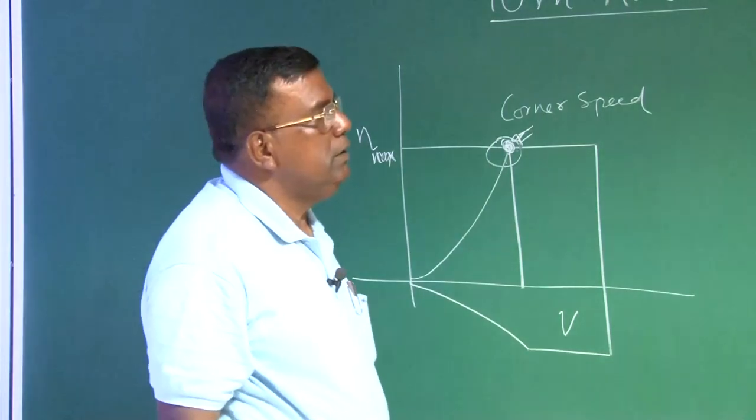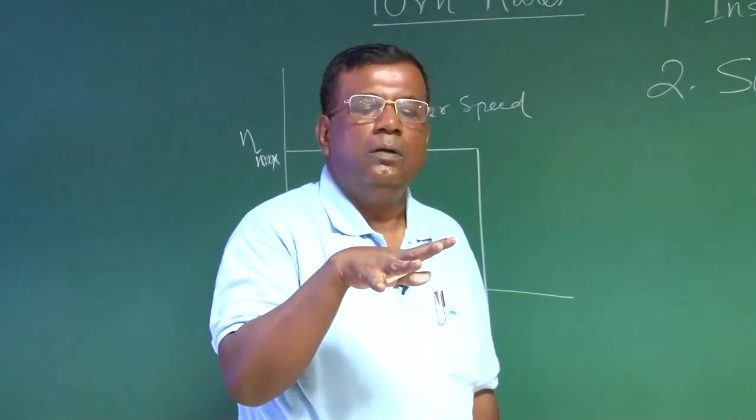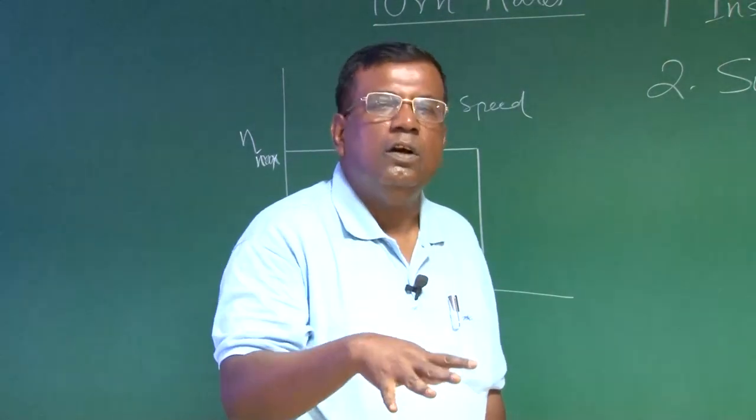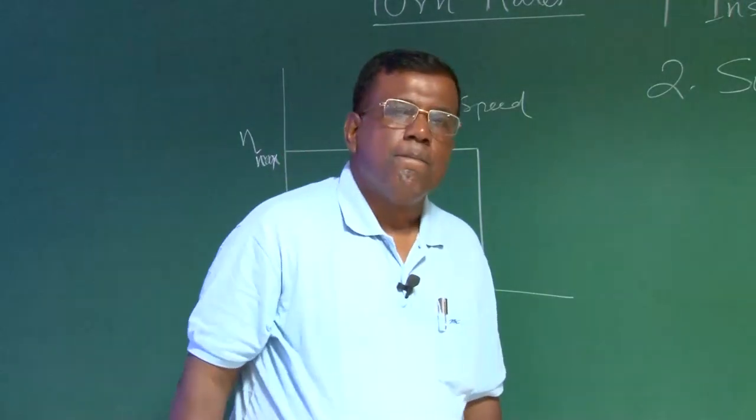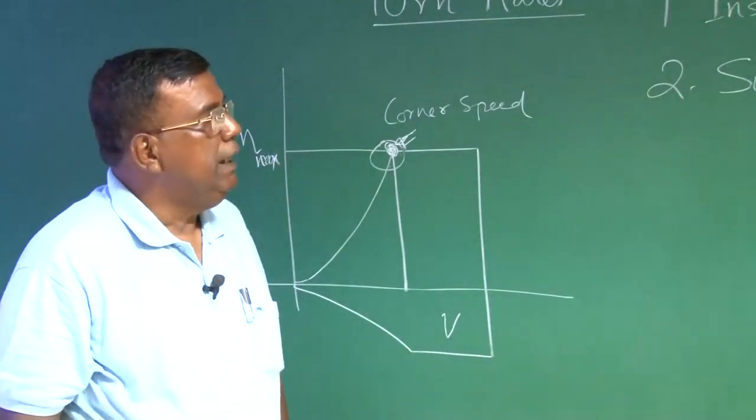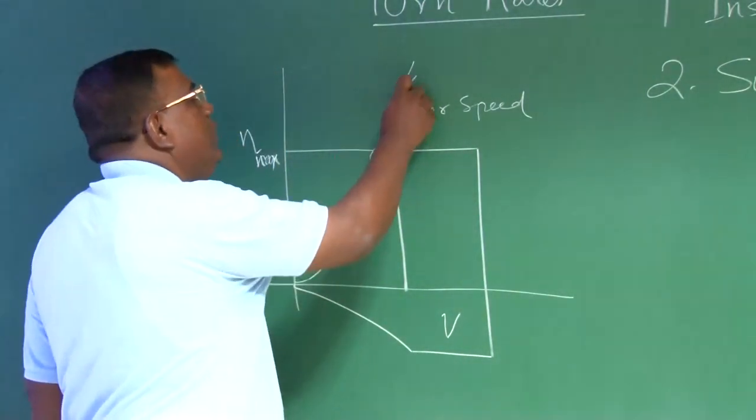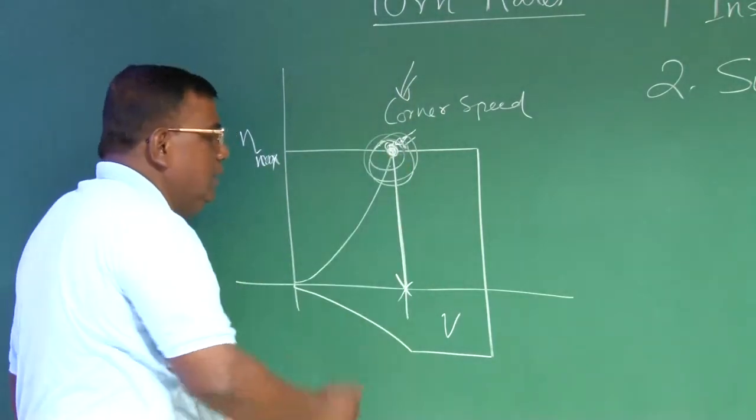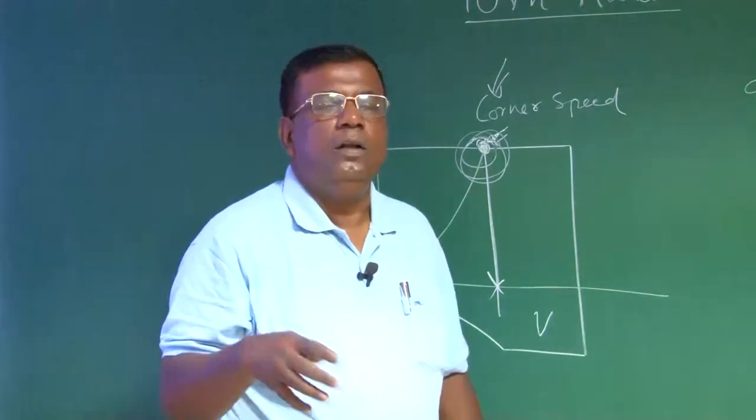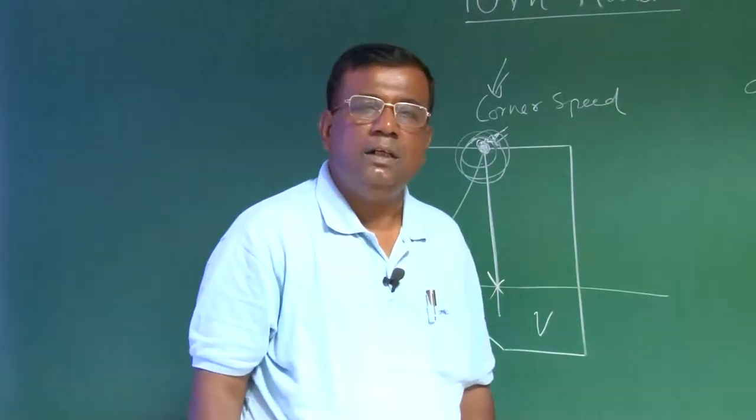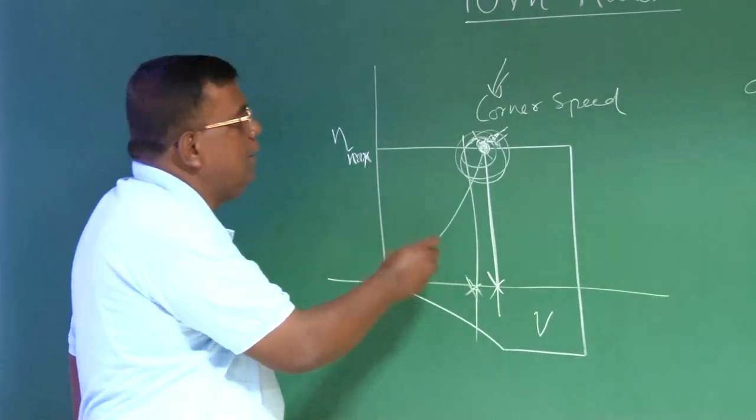Now, what happens in instantaneous turn rate? In instantaneous turn rate, we are talking about I am going like this, I am turning, but I am not bothered about whether the speed is reducing or whether it is losing altitude. So it can do like this. But in sustained turn rate, we want the speed should remain constant. Why is it important? If I want to take advantage of corner speed, then I need to maintain the corner speed. Suppose I am turning and I am not touching the throttle, drag will increase as I am going to take instantaneous turn. So it will reduce the speed. The moment it reduces the speed, you are somewhere here. So you are not able to take advantage of corner speed.